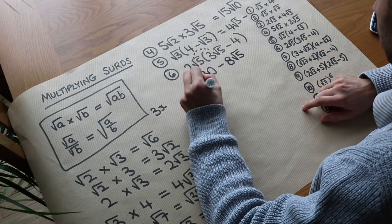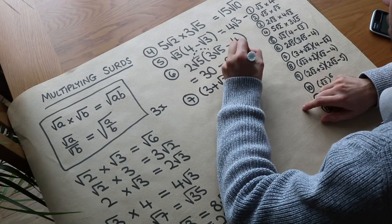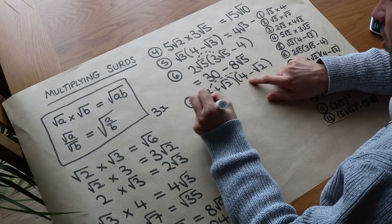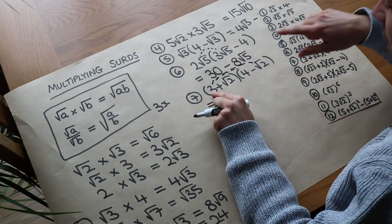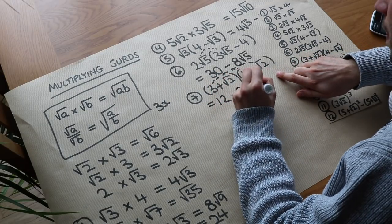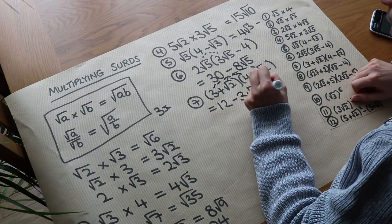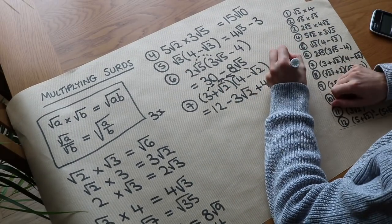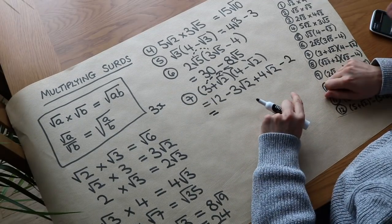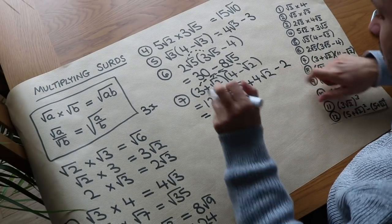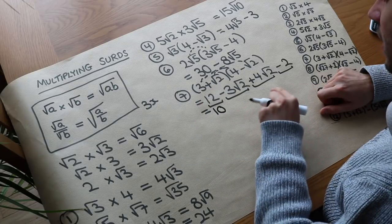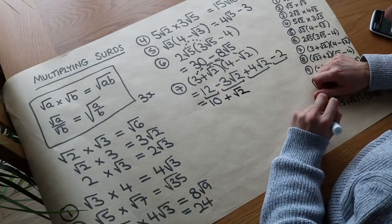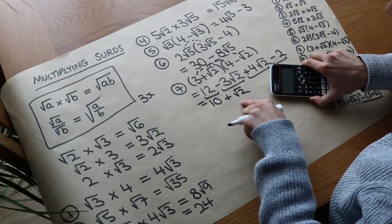What about question 7? We've got (3 plus root 2) times (4 minus root 2). So now we're expanding out two brackets — each possible combination. We've got 3 times 4 which is 12. Then 3 times minus root 2 is minus 3 root 2. Then root 2 times 4 is plus 4 root 2. And finally root 2 times minus root 2: root 2 times root 2 is 2, so it's minus 2. Then we collect like terms: the non-surd terms 12 minus 2 give 10, and minus 3 root 2 plus 4 root 2 gives plus root 2. So the final answer is 10 plus root 2. You can always check that on your calculator.